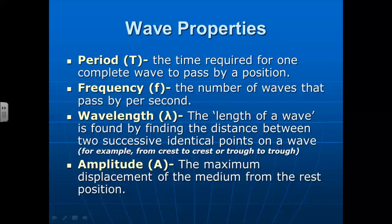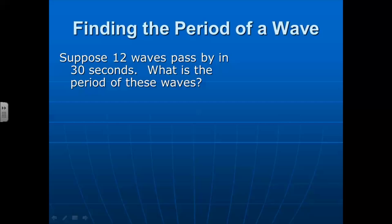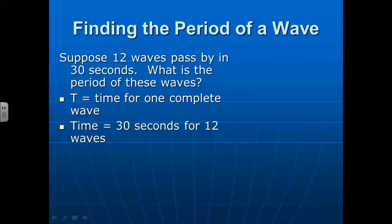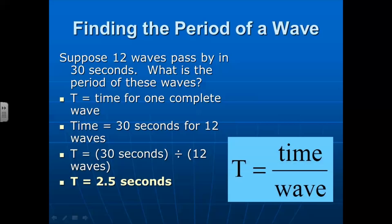Let's do a little sample problem of finding the period of a wave. Let's say that we have 12 waves that pass by in 30 seconds, and we ask what's the period of the wave? Well, the period is the time for one wave to pass. So we take the total time, which is 30 seconds, and there's 12 waves. So if we divide that, the 30 seconds divided by the 12 waves, we would get 2.5 seconds per wave. So our equation is that period is equal to the total amount of time divided by the total number of waves that are passing by.